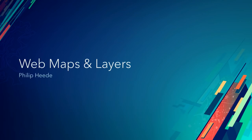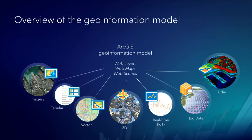Instead of recreating styles and definitions on layers within every single application, with the introduction of the portal — both in ArcGIS Online and ArcGIS Enterprise — we've abstracted that out into the geo-information model. The geo-information model is a higher level of abstraction on top of the many different service types and data types that ArcGIS supports: vector data, imagery, tabular data, 3D data, real-time data. When we talk about that data at this higher level of abstraction, we refer to them as web layers — because they're all served over a network protocol like HTTP or HTTPS.